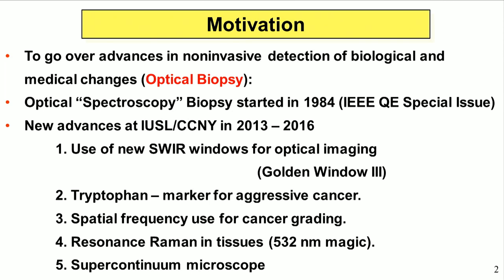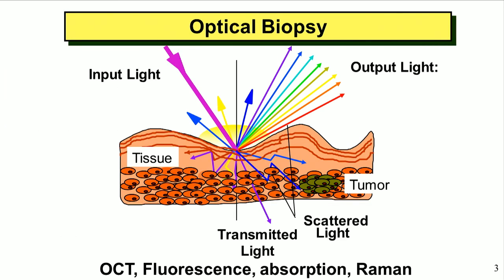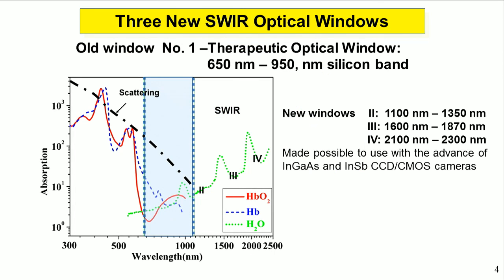And I want to touch on the supercontinuum. First, this slide shows you what optical biopsy is all about: you send light in and the tissue glows and emits all the colors. These colors could be in scattered light, fluorescence, or Raman, and you're trying to find a tumor. OCT is one part of optical biopsy, and then we've got fluorescence, absorption, and Raman — all spectroscopies that allow you to probe the material.